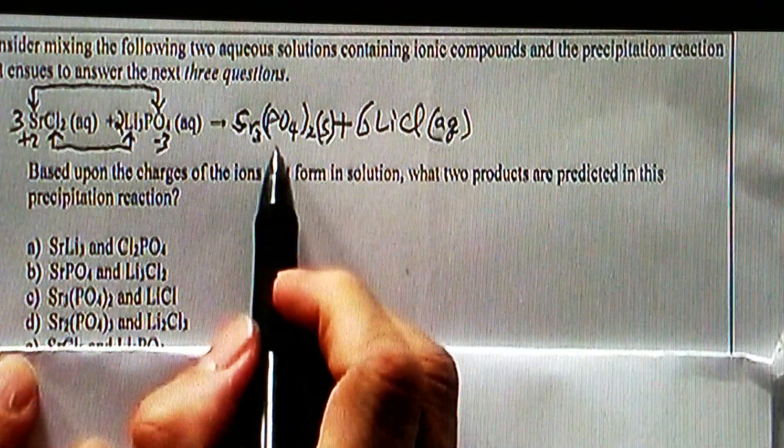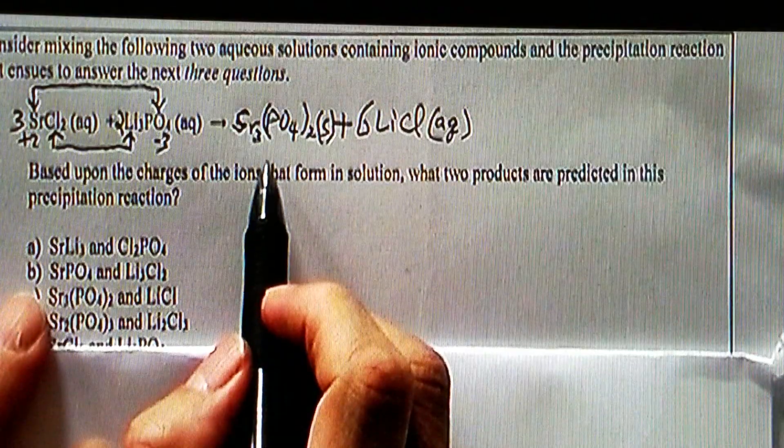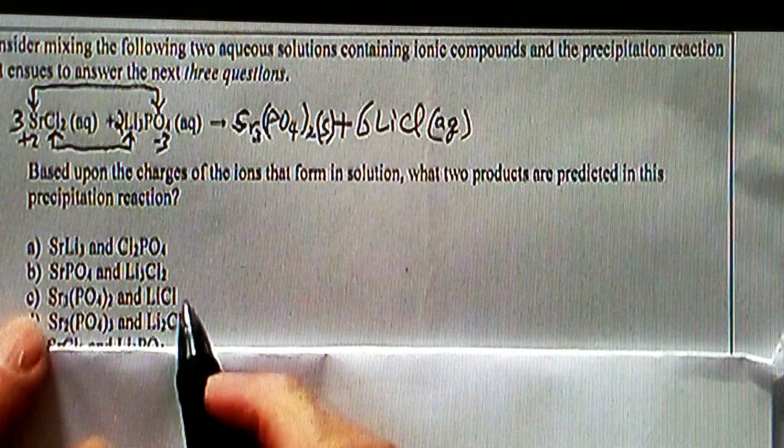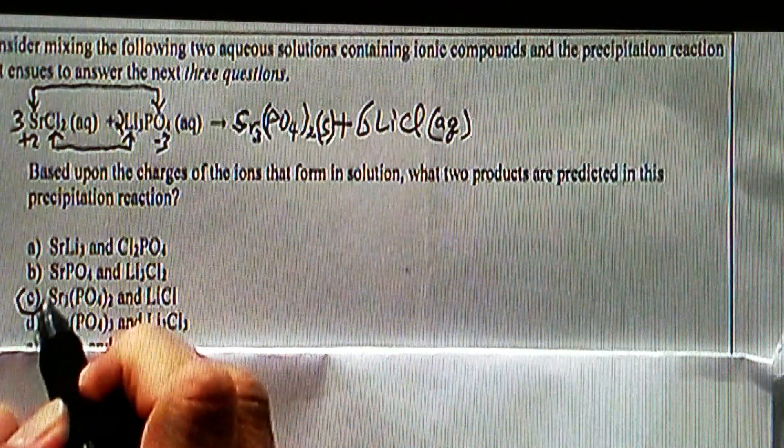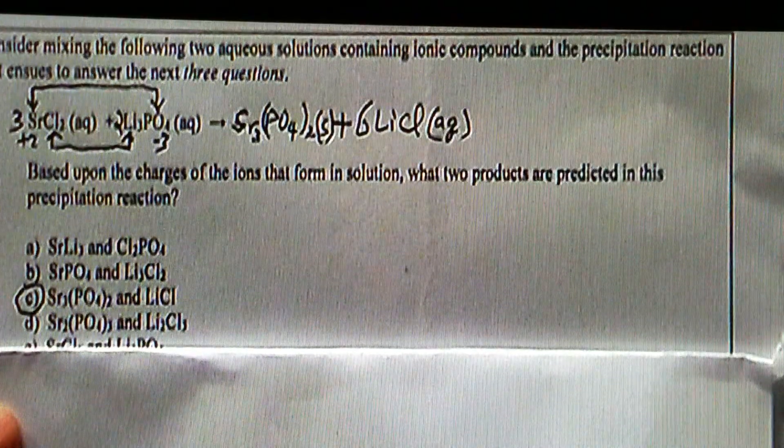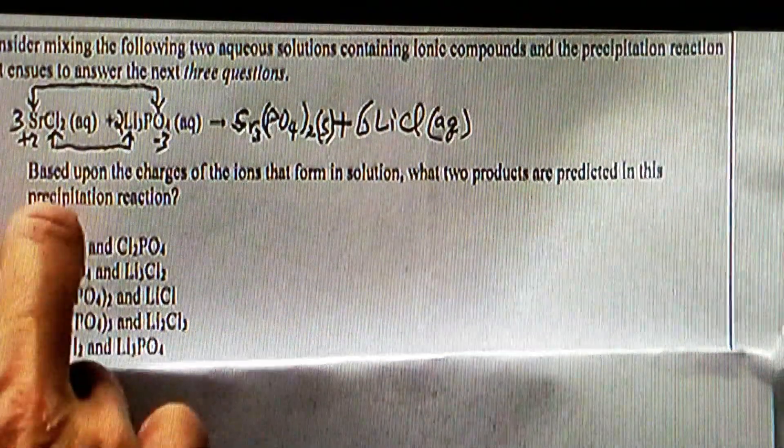What two products are predicted in this precipitation reaction? Obviously, this is the precipitate and this is a solution, which means this stays in solution in ion form. But this one is called a molecular equation. So we just find the ones, which should be C. C is the answer for question 16.